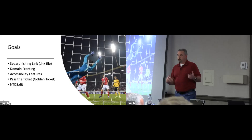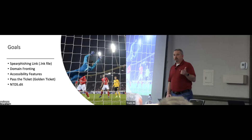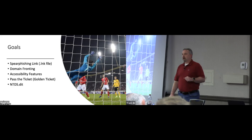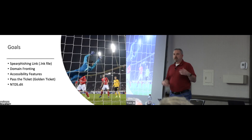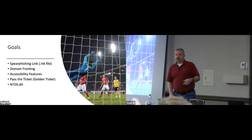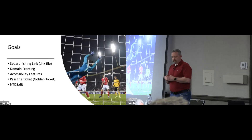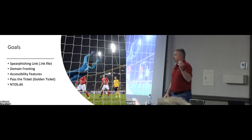I established a couple of high-level goals — if I can't get anything else done, these are the things I want to do: use the weaponized link file; try some domain fronting; the domain fronting APT29 was doing used a Meek plugin through Tor, which I thought was pretty interesting, but I wanted to stay visible for the blue team rather than encode everything in Tor and HTTPS; do accessibility features; do a golden ticket attack; and go after the NTDS DIT file — which is game over for Active Directory. Those were my five high-level pieces.